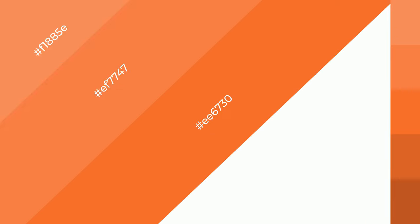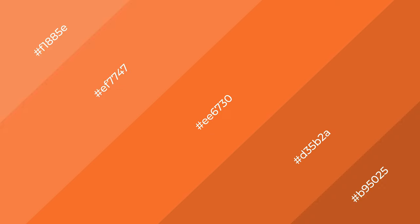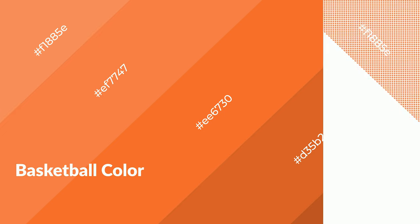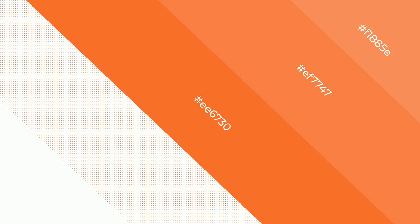Shades are used in patterns, 3D effects, and layers, and they create depth and drama. Basketball orange is a warm color that emits cozier and active emotions. Warm colors are symbols of warmth, fire, heat, and sunshine.